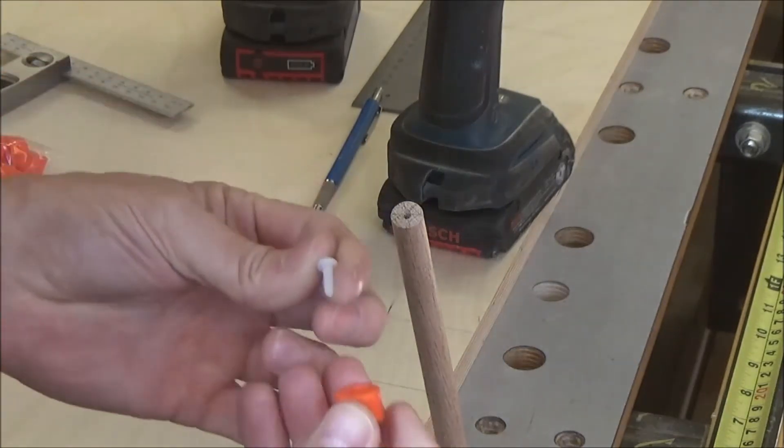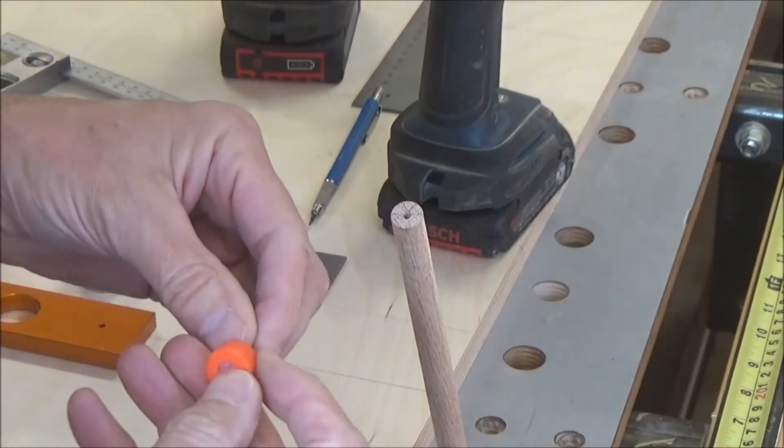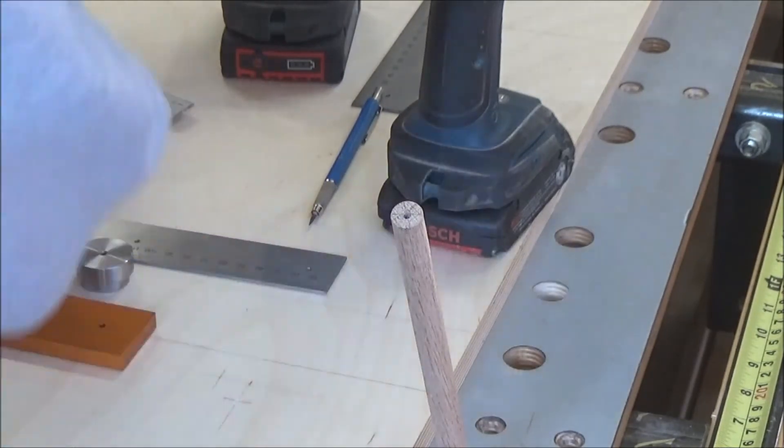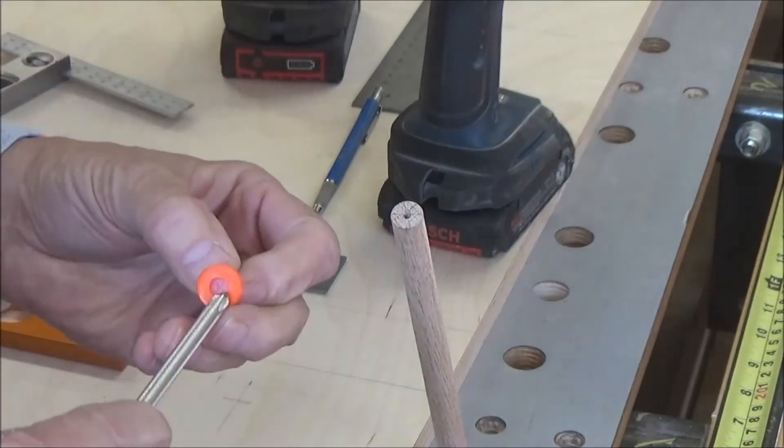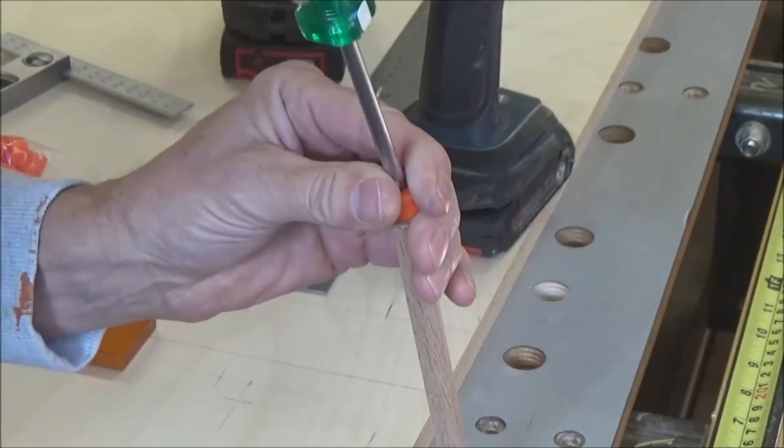Take the rubber foot and they give you these plastic threaded screws, which is good because you don't want metal next to your blade at all. Then simply just thread it in the hole.